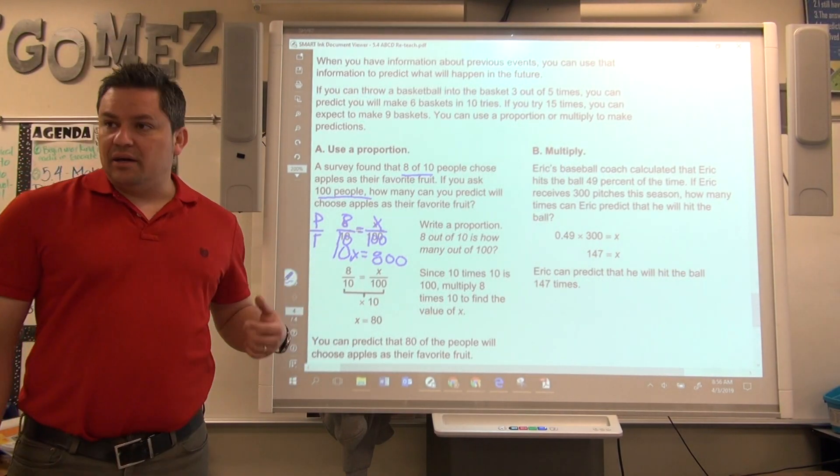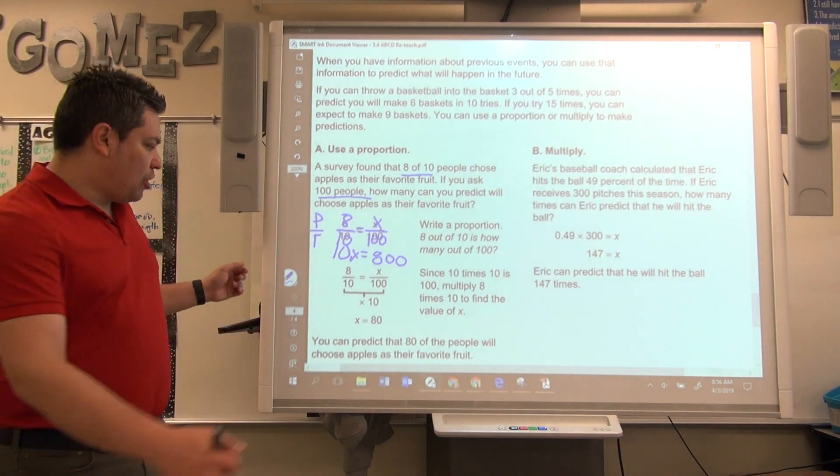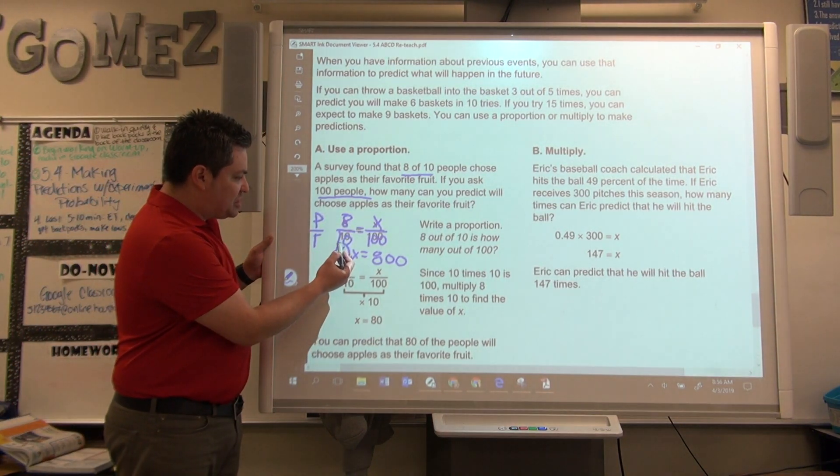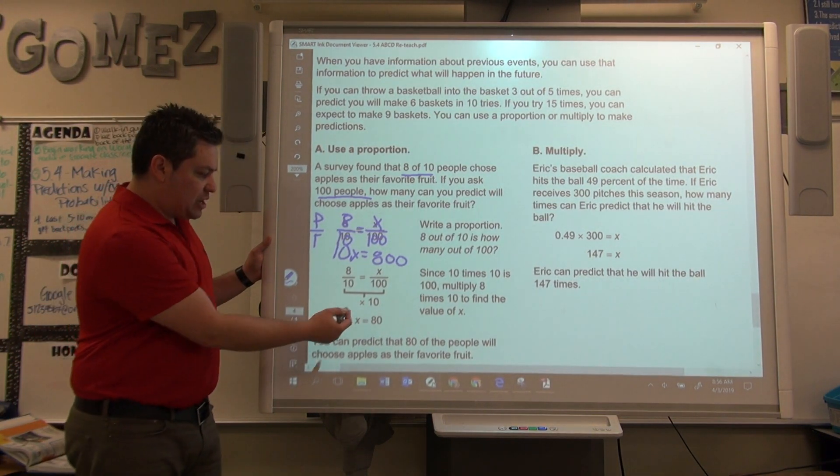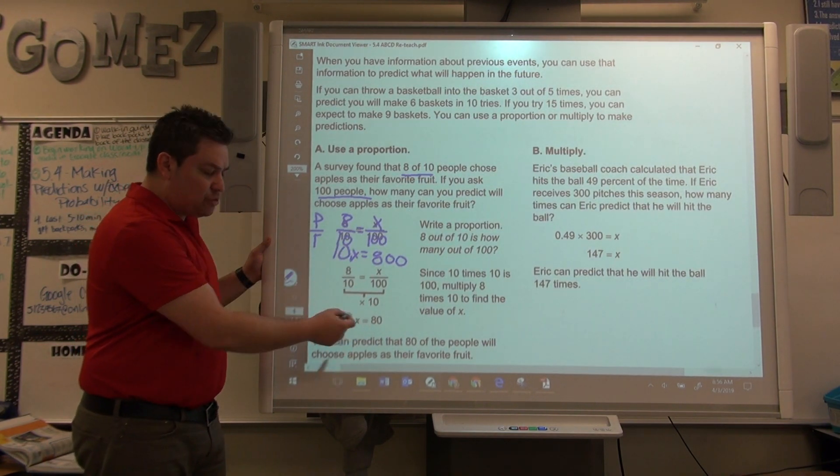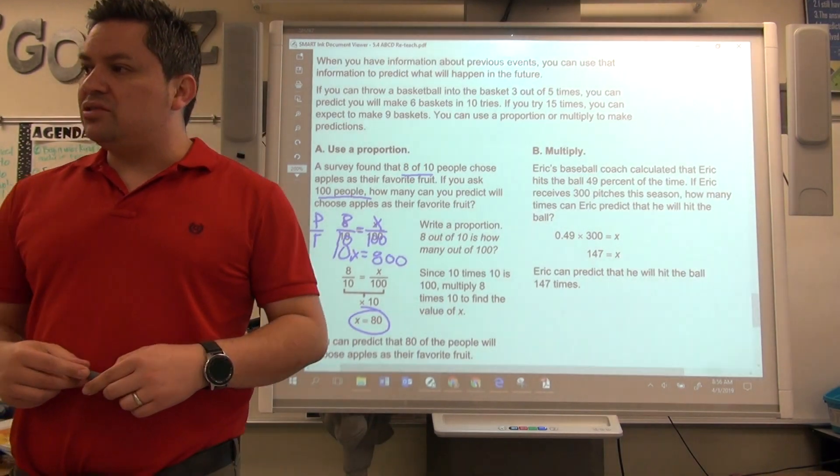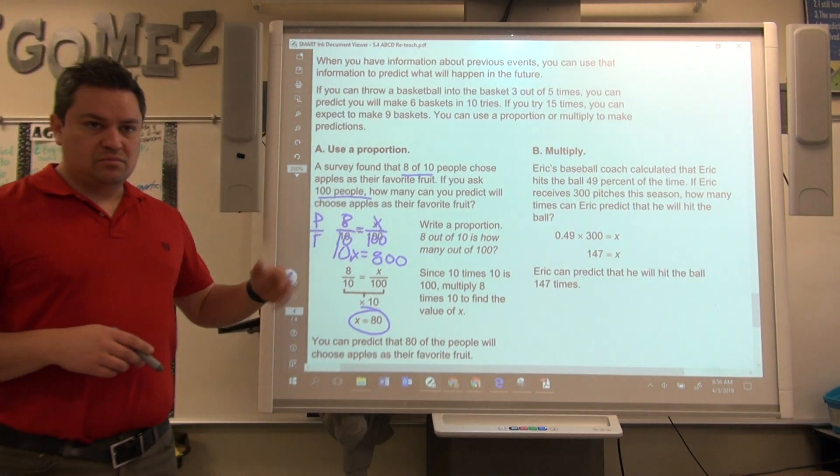And then we'll just divide by ten, or take away the zero. Or, you can look at this. What happened between ten and a hundred? Well, it got multiplied by ten. So, you must do the same thing to the top. And eight times ten equals to eighty. We all know how to solve cross products.